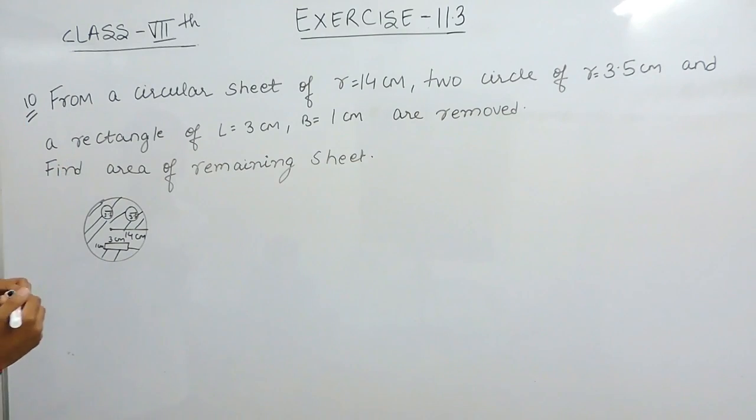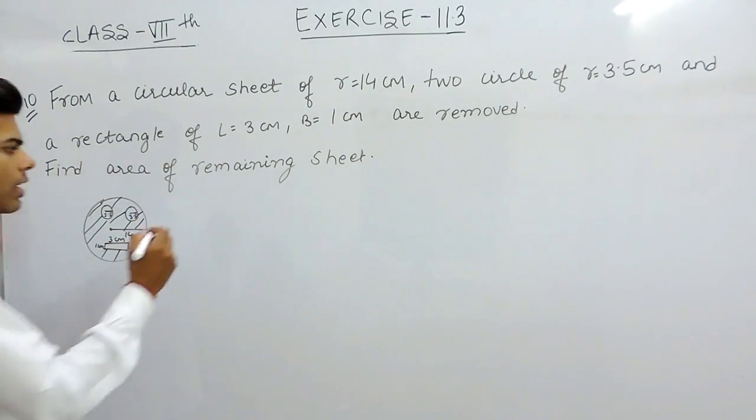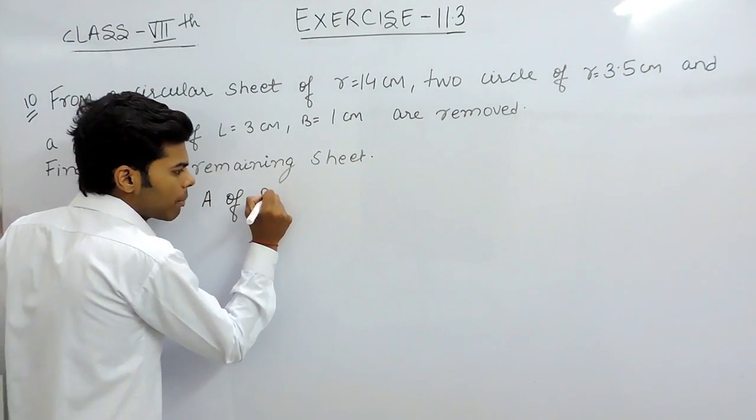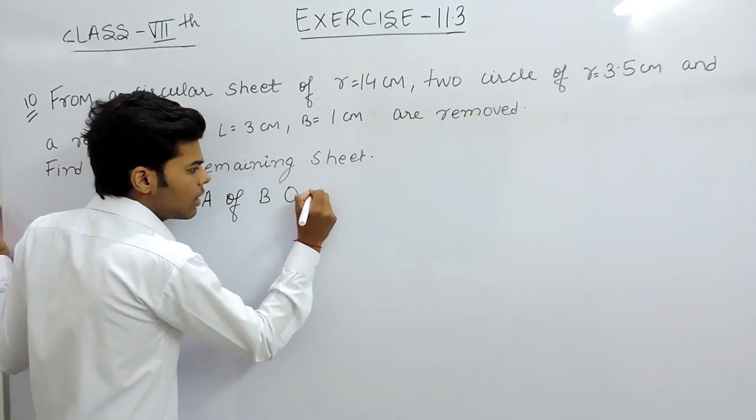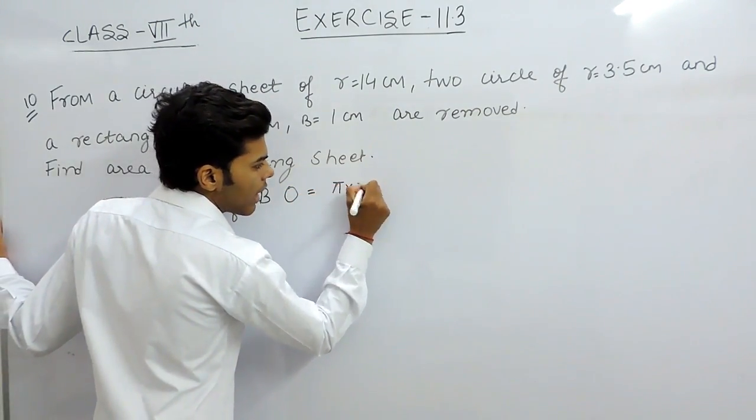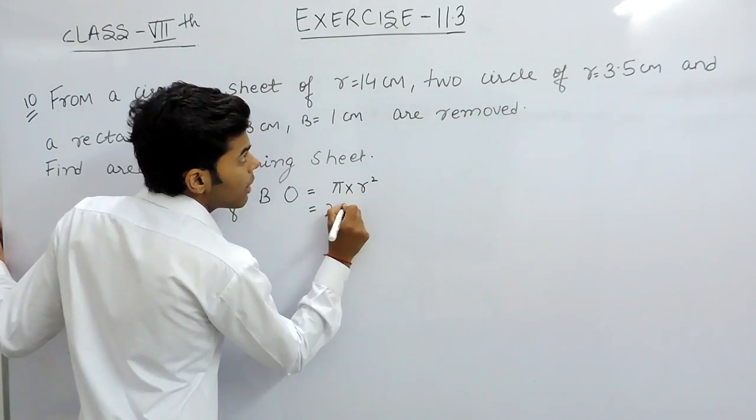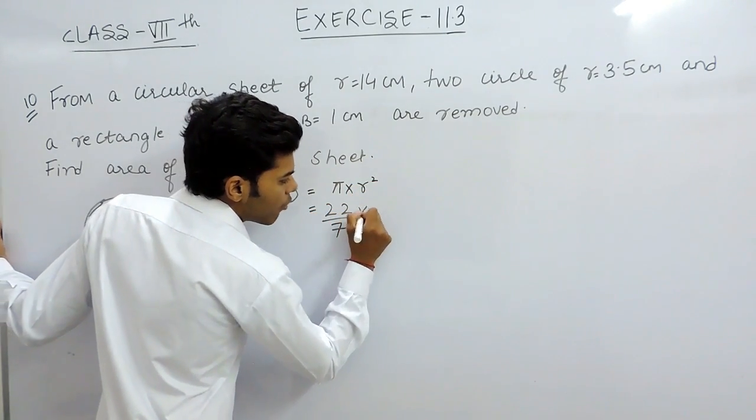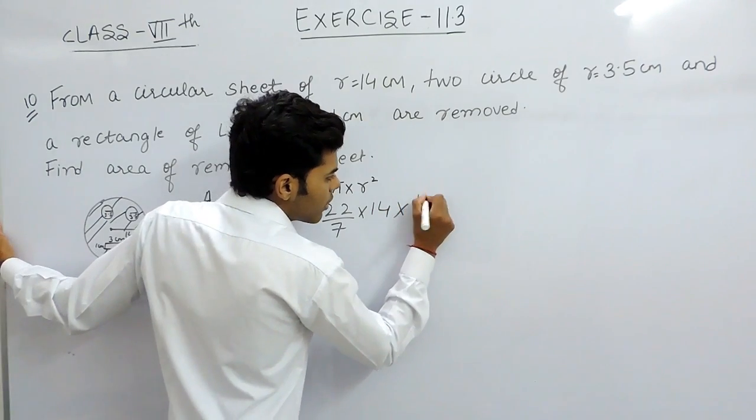First of all we will find the area of this bigger circle and then we will subtract the area of these figures. Area of bigger circle equals to πr², that is 22/7 multiplied with 14 multiplied by 14.